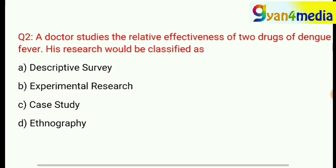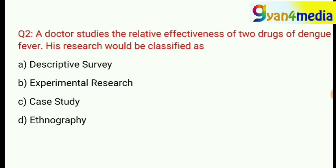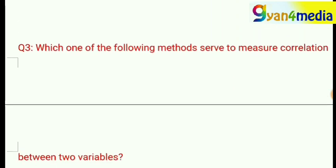This is a tricky question. A doctor studies the relative effectiveness of two drugs for dengue fever. His research would be classified as: option A, descriptive survey; option B, experimental research; option C, case study; option D, ethnography. The correct answer is option B — experimental research.